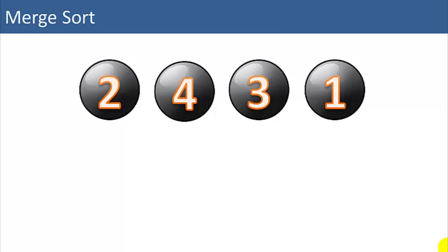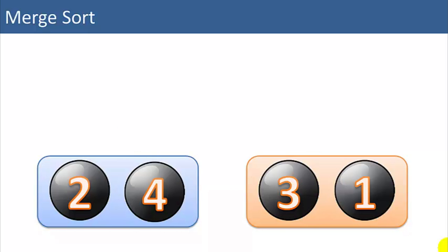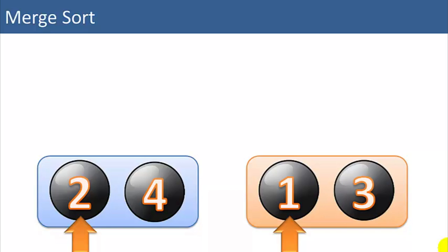So let's say we wanted to sort a small list of four integers: 2, 4, 3, 1. One way to sort them would be to break the list in half into two smaller lists, then sort those two smaller lists. Now 2, 4 is already sorted; 3, 1 we have to swap places. Now we have two smaller lists that are in sorted order, and then merge those two smaller lists back together.